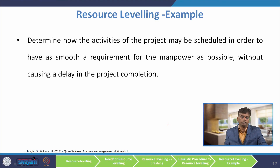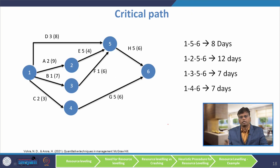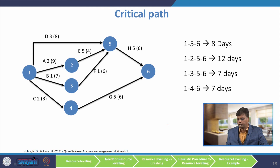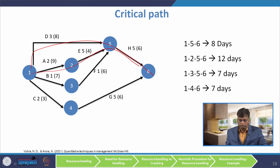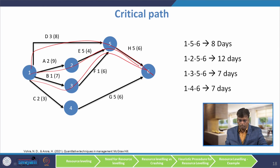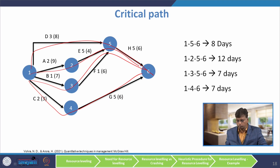The first task is to find out the critical path. The possible paths and their durations are: path 1-5-6 has a duration of 3 plus 5 = 8 days; path 1-2-5-6 has a duration of 2 plus 5 + 5 = 12 days; and path 1-3-5-6 also has a duration of 7 days. So the critical path is 1-2-5-6 with the maximum duration of 12 days.